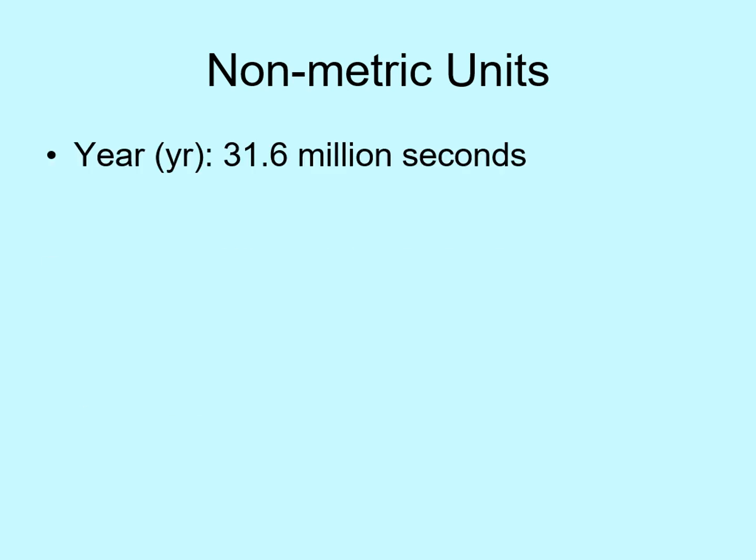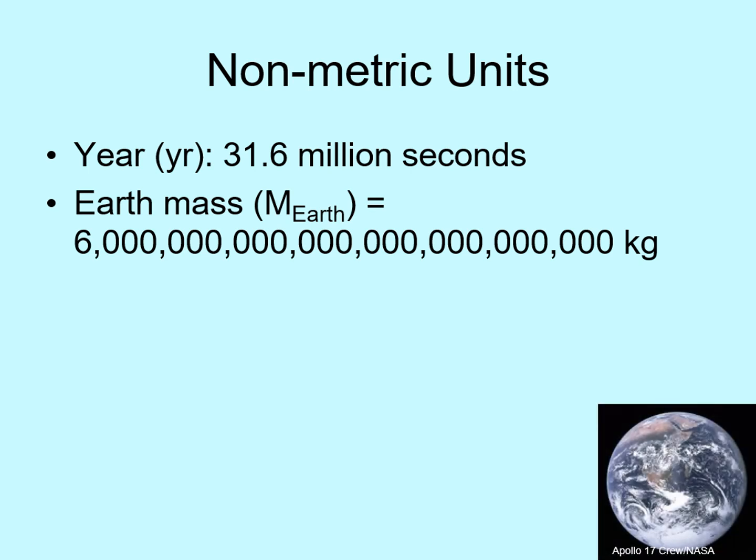In addition to the basic metric units, there are several units that are not part of the standard metric system but which we use a lot in astronomy. The first one is the year — the time it takes the Earth to go around the Sun — which is 31.6 million seconds. If you really want to impress your friends, you can say that a year is just over pi times ten to the seventh seconds. Next is an earth mass — the mass of the entire Earth — which measured in kilograms is six followed by 24 zeros. This number points out a problem we're going to have to deal with next: what to do about ridiculously big numbers. We're going to see a lot of those, and you definitely don't want to have to write them out longhand all the time.